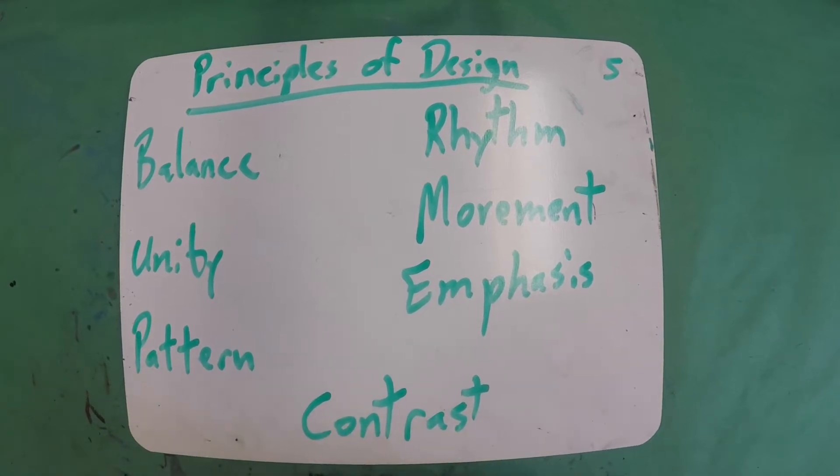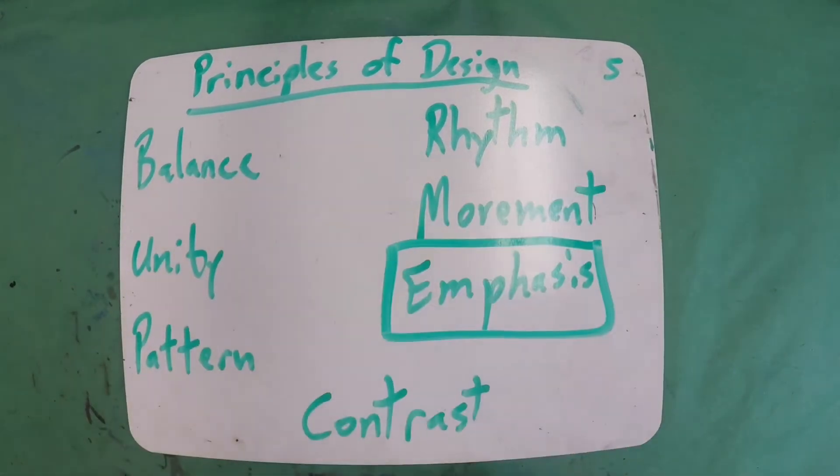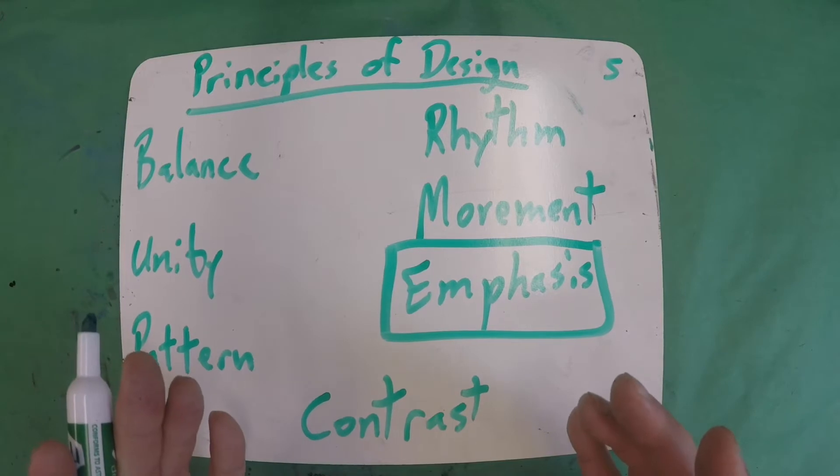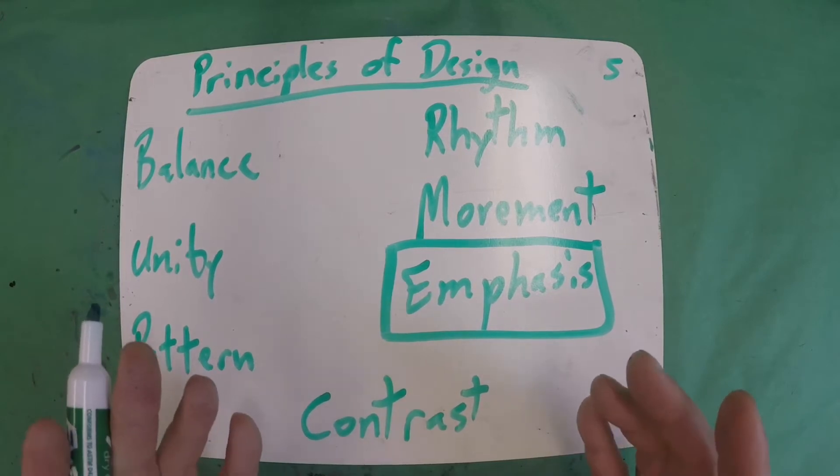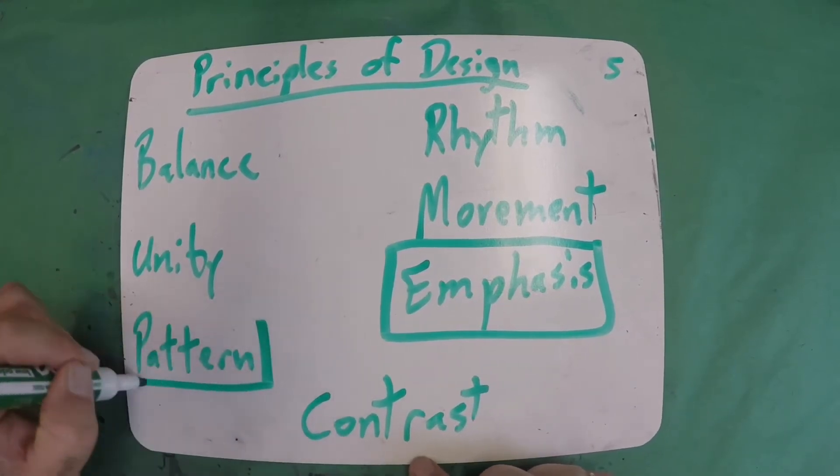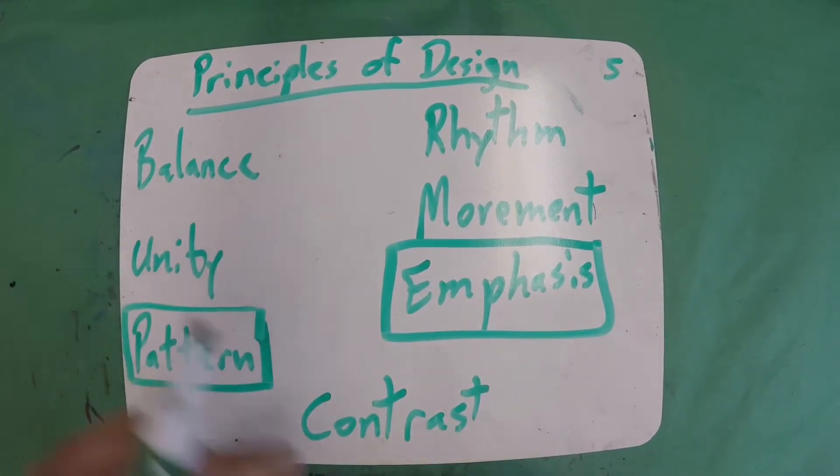So in today's drawing, we're actually going to have quite a few of these principles of design working for us. First one we want to discuss is our emphasis, our main thing in the picture. Now our book today was about snails. So what do you think our emphasis is going to be in this drawing? That's right. We're going to make a snail.